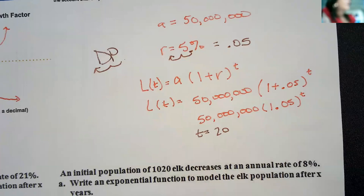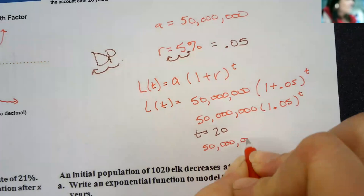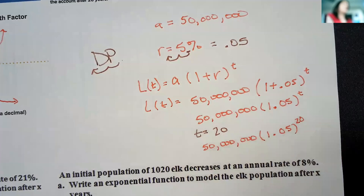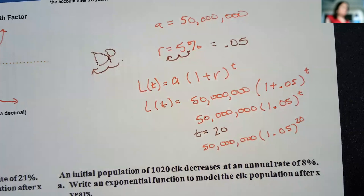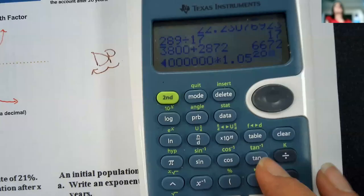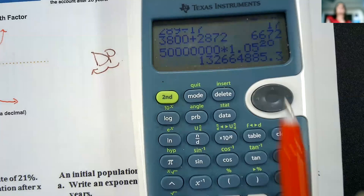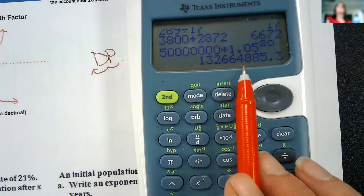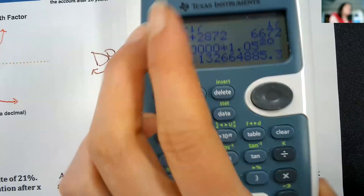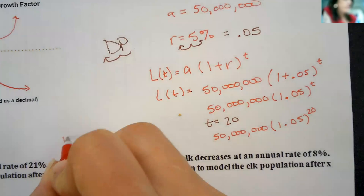If we plug in 20 for T, we would have 50 million times 1.05 to the 20th. We'll type that all into the calculator. Enter all that in, and I get $132,664,885.30 is how much money he would have after 20 years.